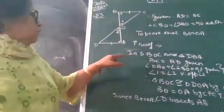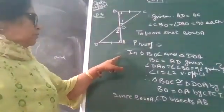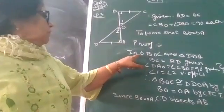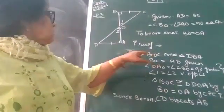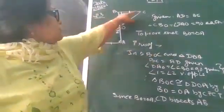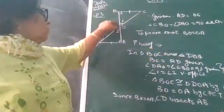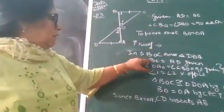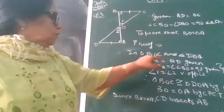Now, first we will prove two triangles are congruent. We will take triangle BOC and BOA. In this, BC is equal to AD.